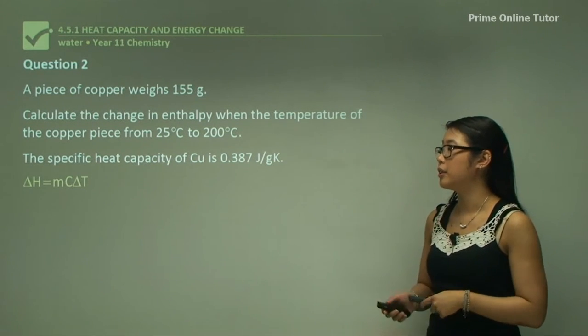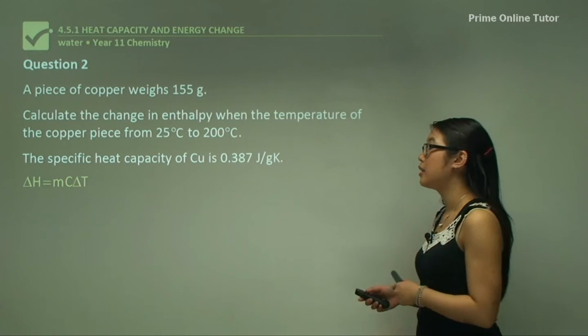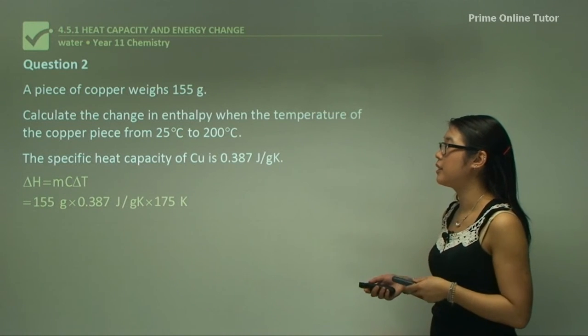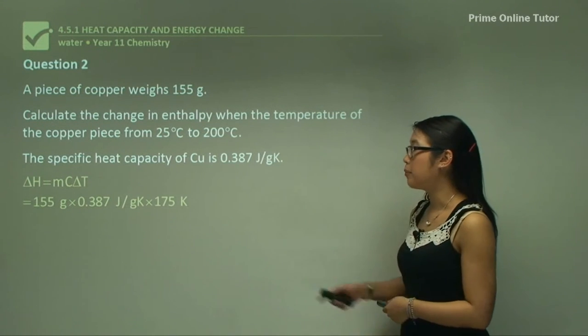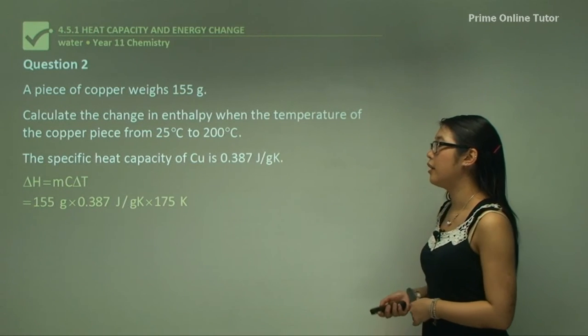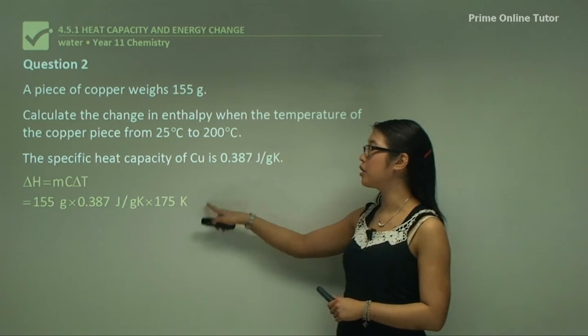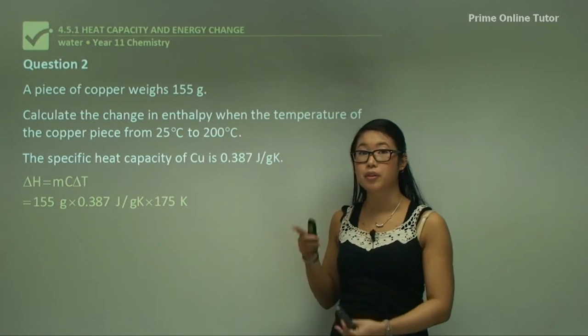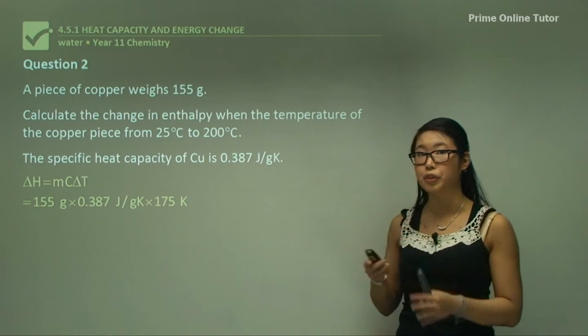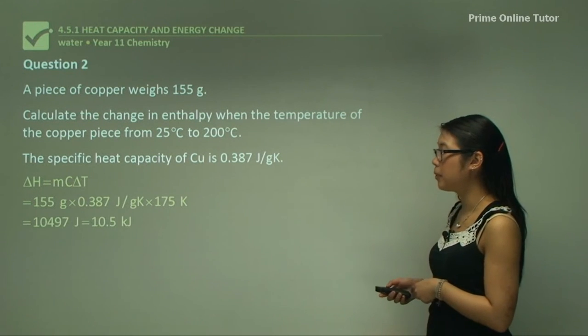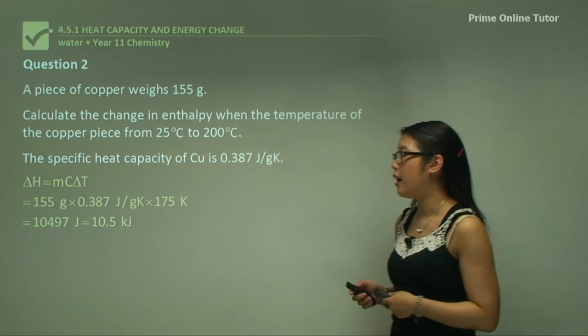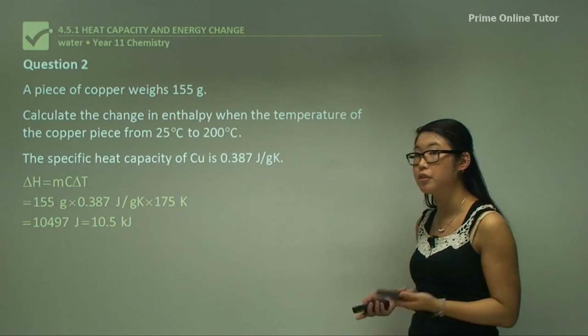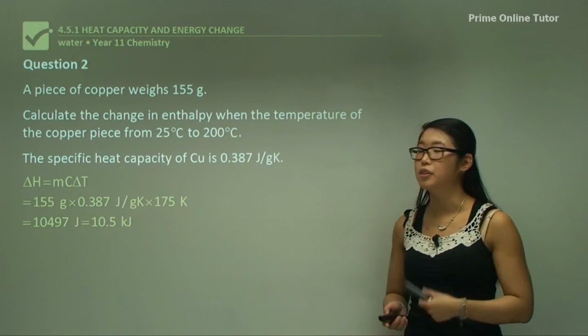We use the equation ΔH = mcΔT, or MCAT. The mass is 155 grams, the specific heat capacity was given as 0.387, and the change in temperature was 200 minus 25, which gives us 175 Kelvin. Plugging that all in, we get 10,497 joules. We can convert that to kilojoules by dividing by 1000, giving us 10.5 kilojoules when we round it off.